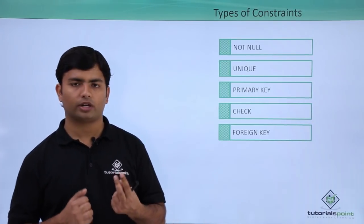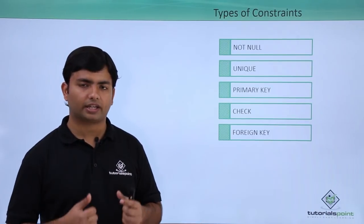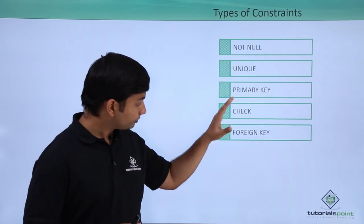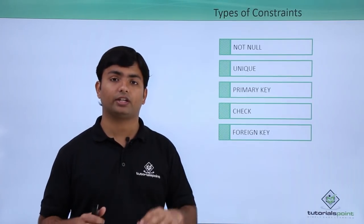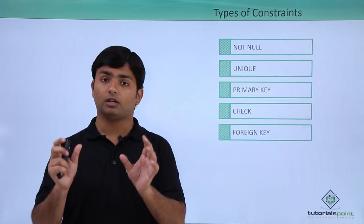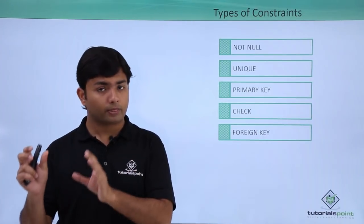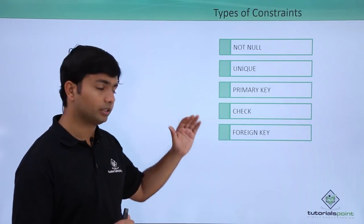But if you enter anything like A, B, C, D, they don't make any sense. So those things can be validated by the check constraint, which will ensure that a particular value which is having a particular condition satisfying will only be allowed to enter in the table.